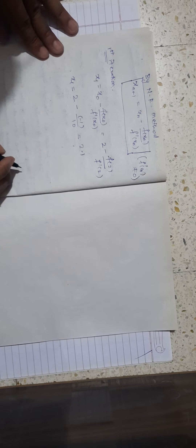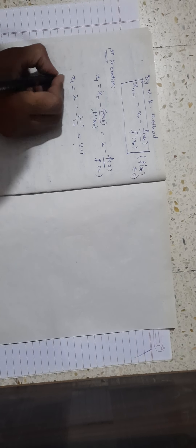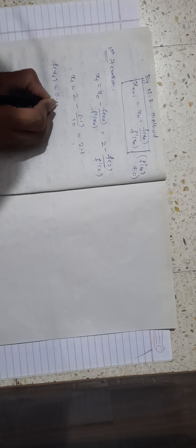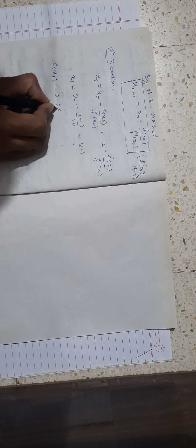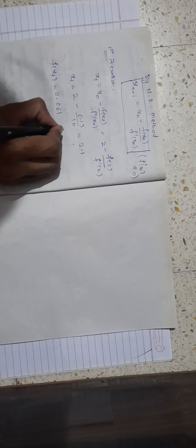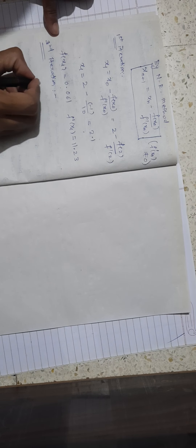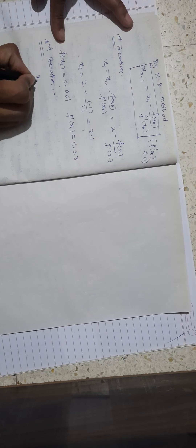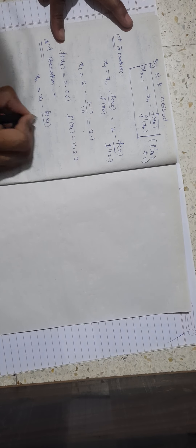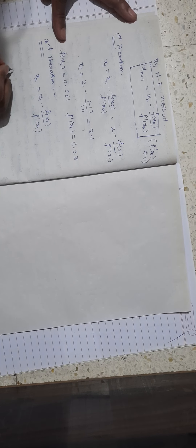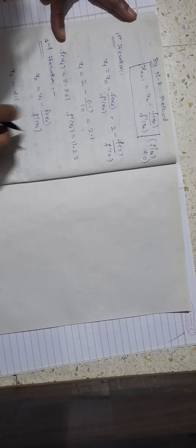First iteration (n = 0): x₁ = x₀ - f(x₀) / f'(x₀) = 2 - (-1) / 10 = 2.1. Next, we find f(x₁): substituting x₁ = 2.1 into f(x) gives f(x₁) = 0.061. Then f'(x₁) = 3(2.1)² - 2 = 11.23.